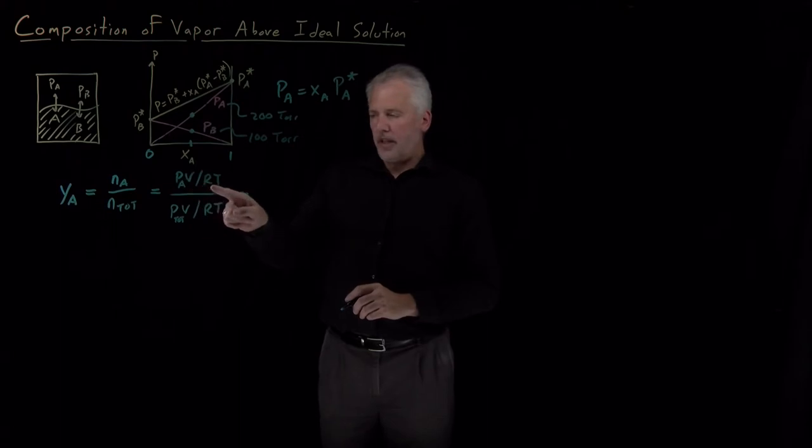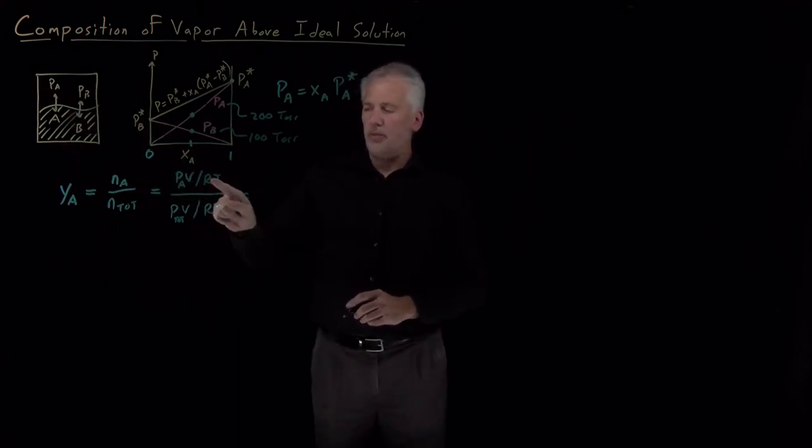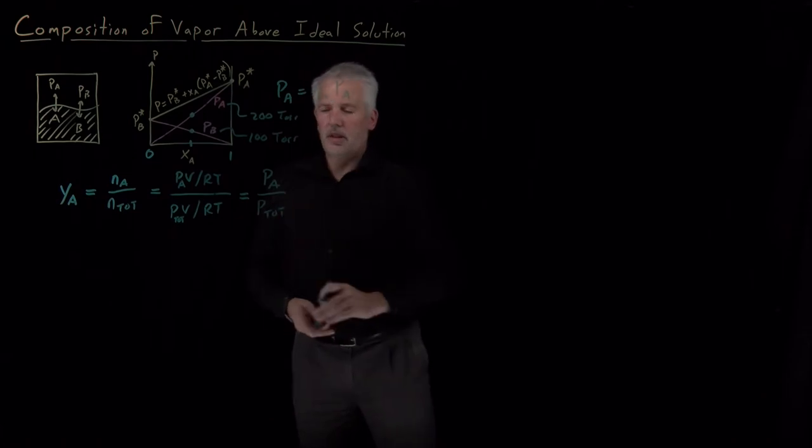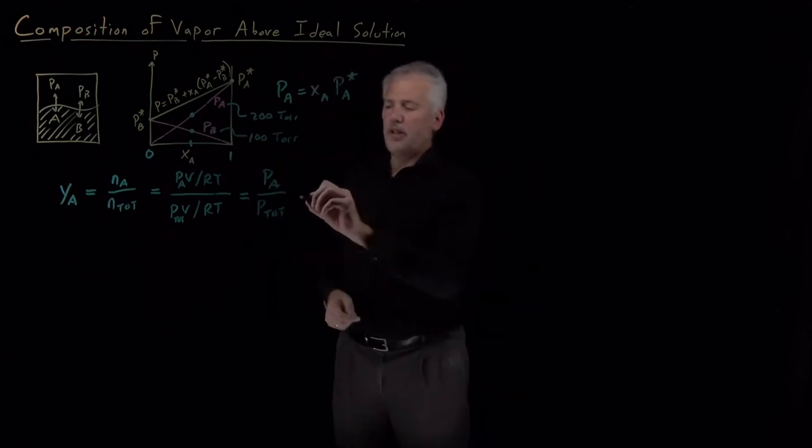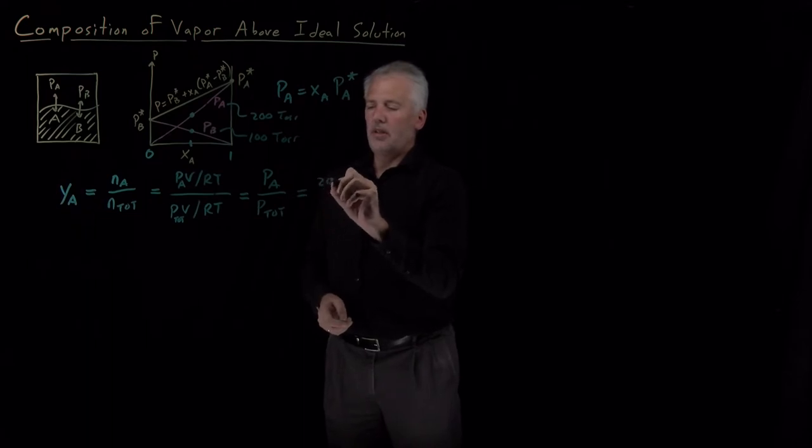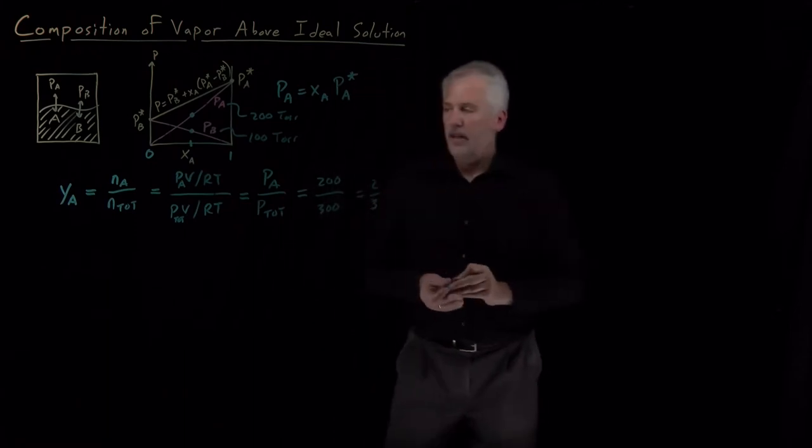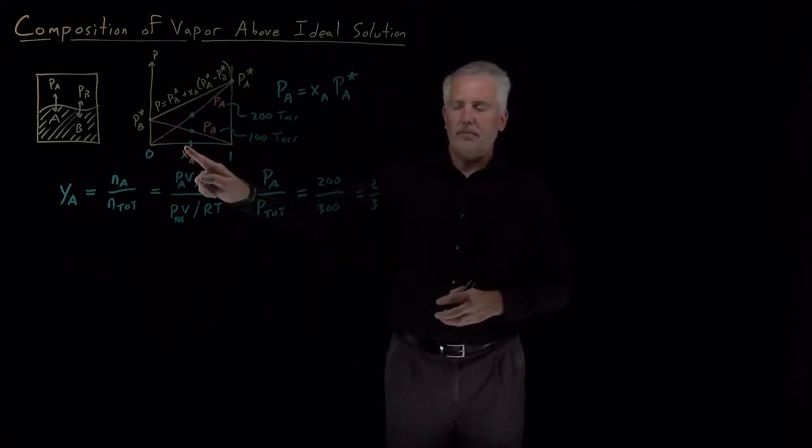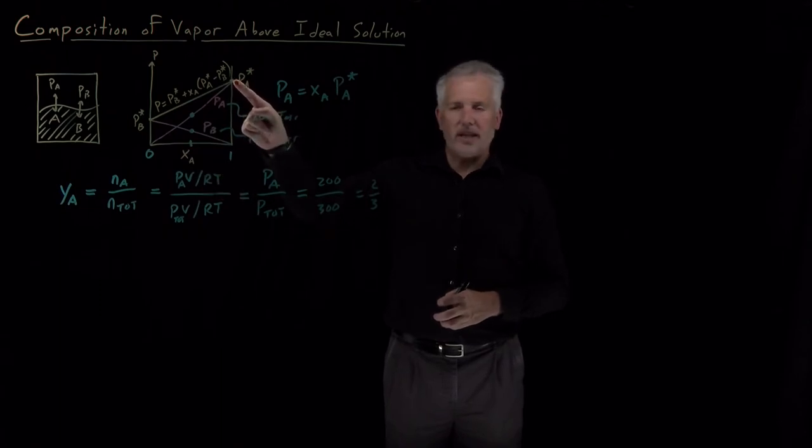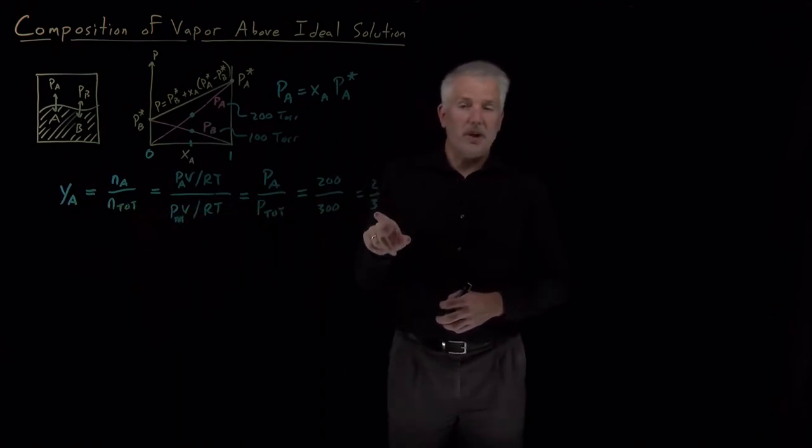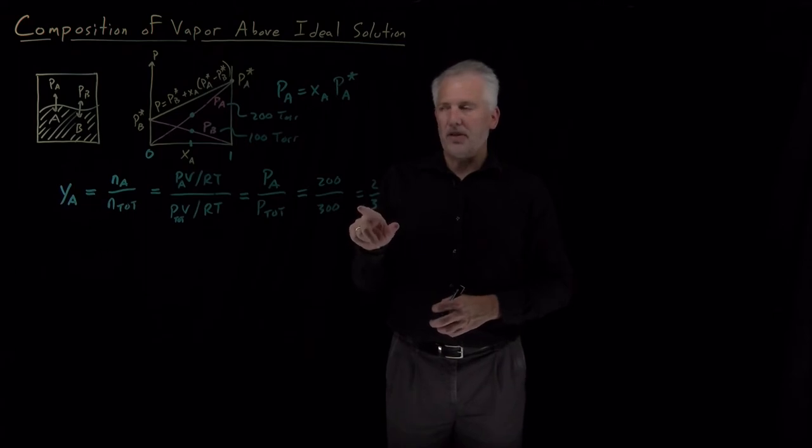After some cancellation here, the V, R and T cancel, and we just have PA over P total. In this case, PA of 200 over total pressure of 300. For that 50-50 mixture of a solution where A is more volatile, has a higher vapor pressure than B, it turns out that the mole fraction in the vapor phase is two-thirds, it's bigger than one-half.